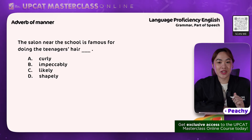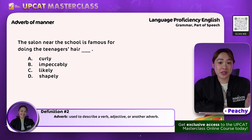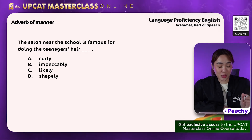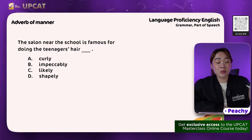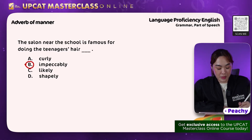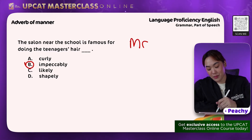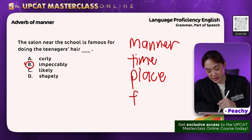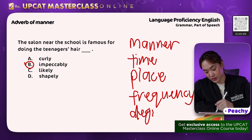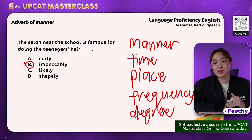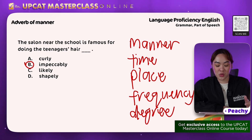Alright, for this item, we are looking at the adverb of manner. Adverbs are used to describe a verb, adjective, or another adverb. Our main clue here is 'doing the teenager's hair black' — in what manner does the salon do the teenager's hair? The correct answer is D — impeccably. So, the salon near the school is famous for doing the teenager's hair impeccably. Similarly, with the order of adjectives, it's best to memorize at least two to three of these items to guide you with questions on the order of adverbs.